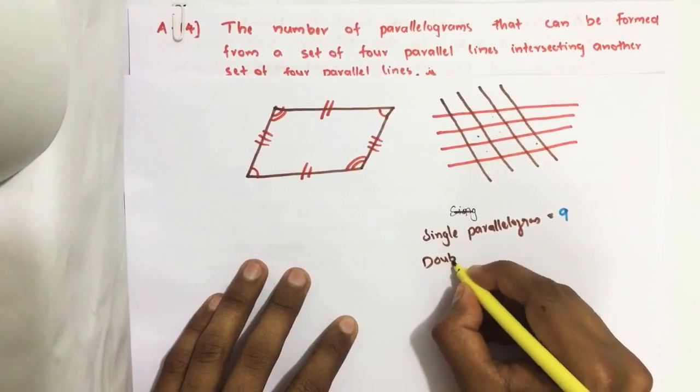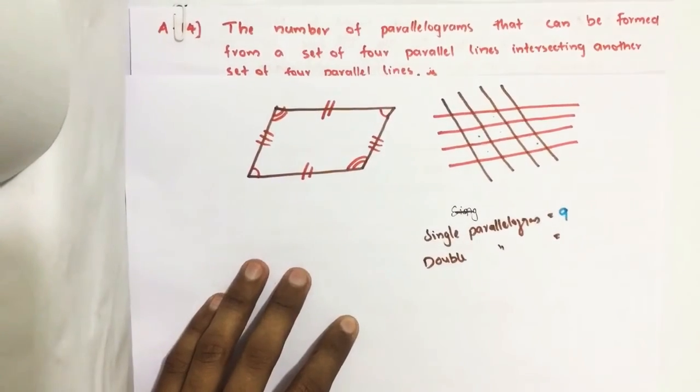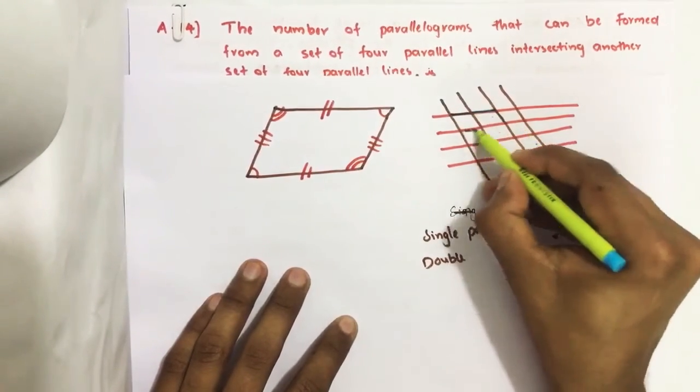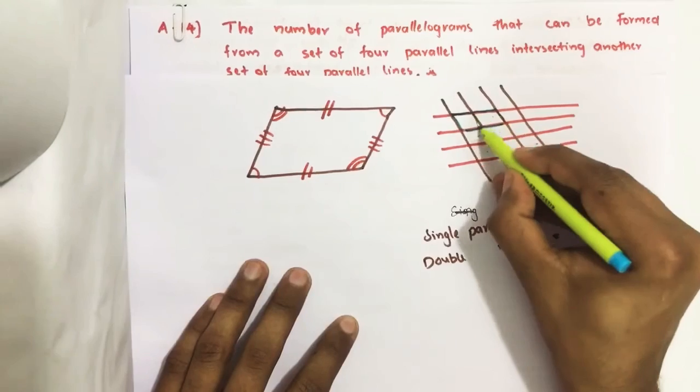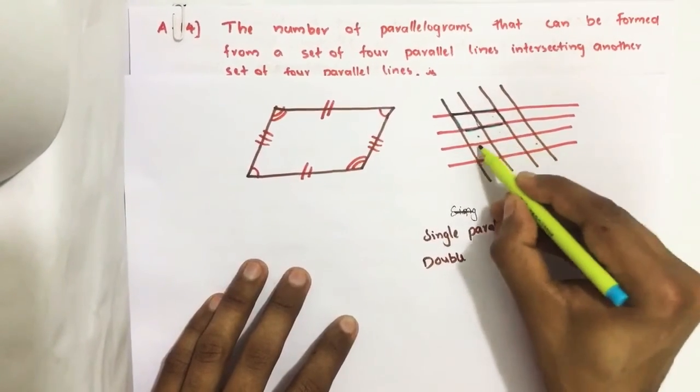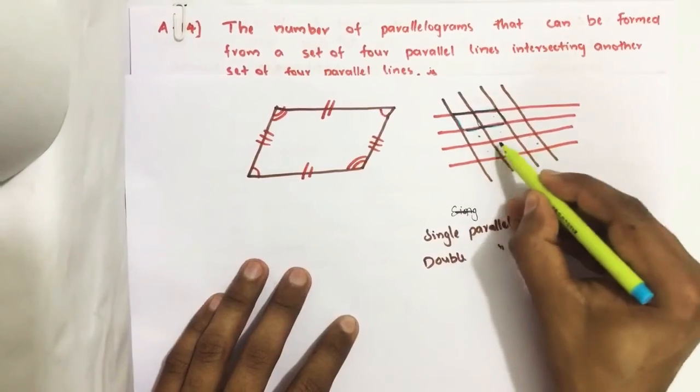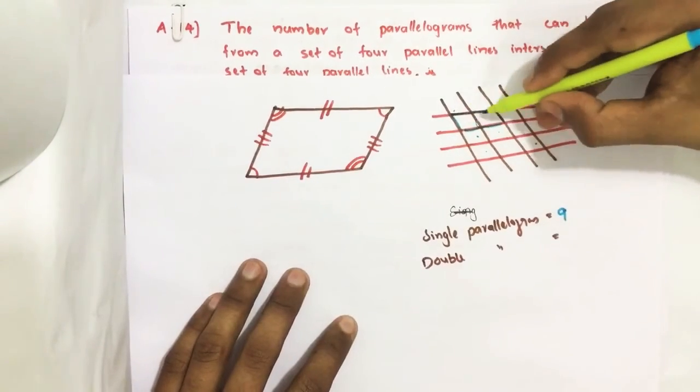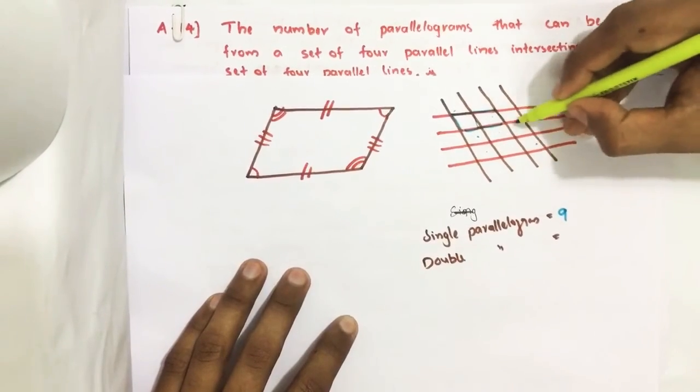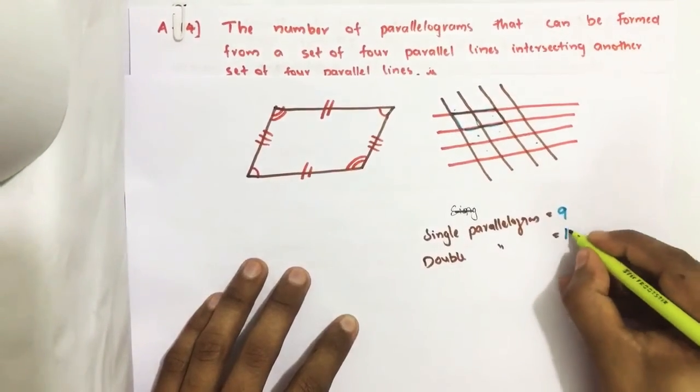Next, double parallelograms. Like this is 1, then this is 2, then this is 3, this is 4, 5, 6, the same way, 7, 8, 9, 10, 11, 12. Here it is 12.